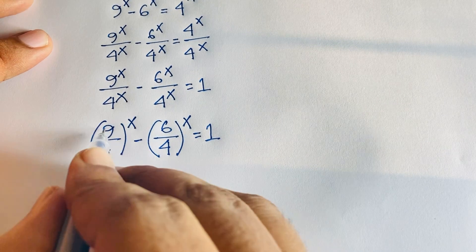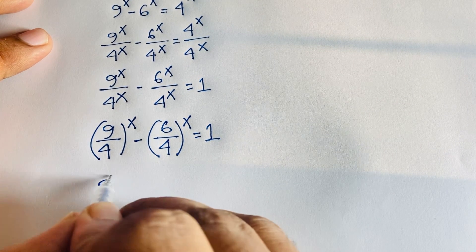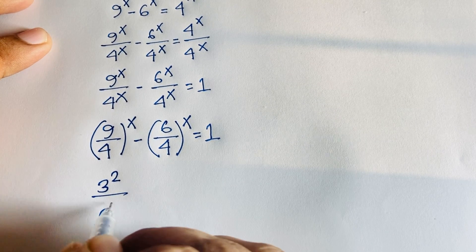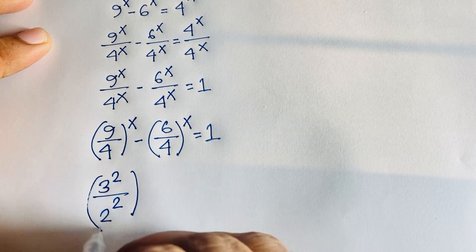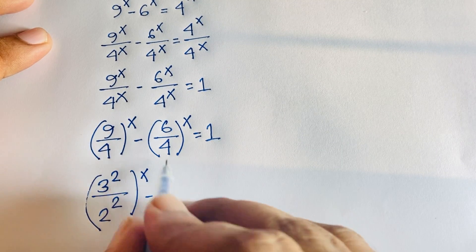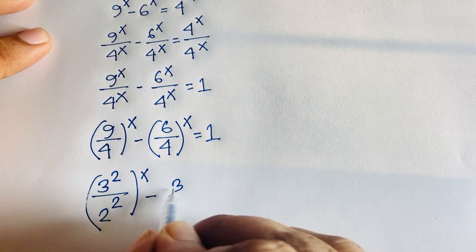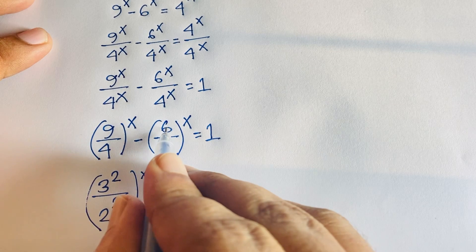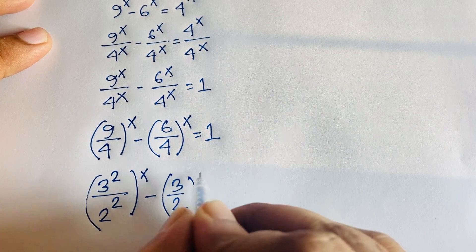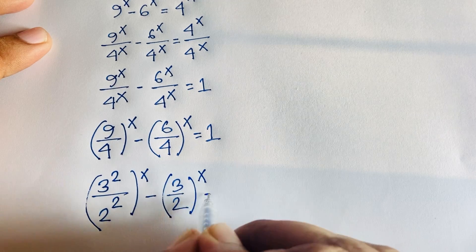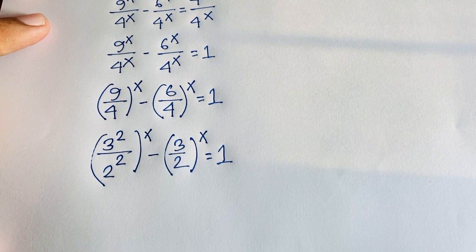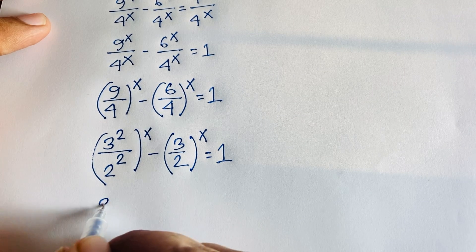Now I can see that 9 is 3 squared and 4 is 2 squared, so (9/4)^x becomes (3/2)^(2x). And 6/4 simplifies to 3/2, so the second term is (3/2)^x. The equation becomes (3/2)^(2x) minus (3/2)^x equals 1.